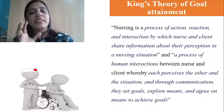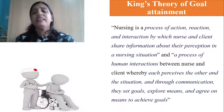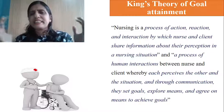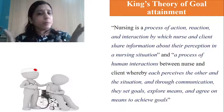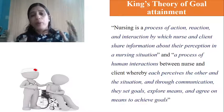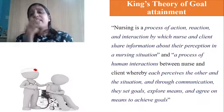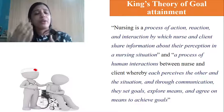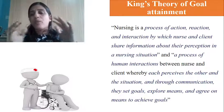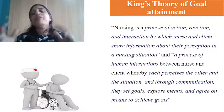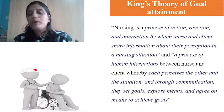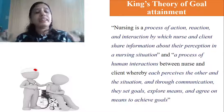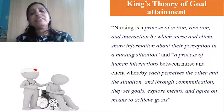This is what King gives importance to in nursing — the core of the interpersonal theory of goal attainment. It is an interpersonal theory involving two or more people. There is action, reaction, interaction, and through that interaction both explore each other's perceptions. Once they understand each other's perception, they set a goal, find different ways to achieve it, and agree on a particular means.